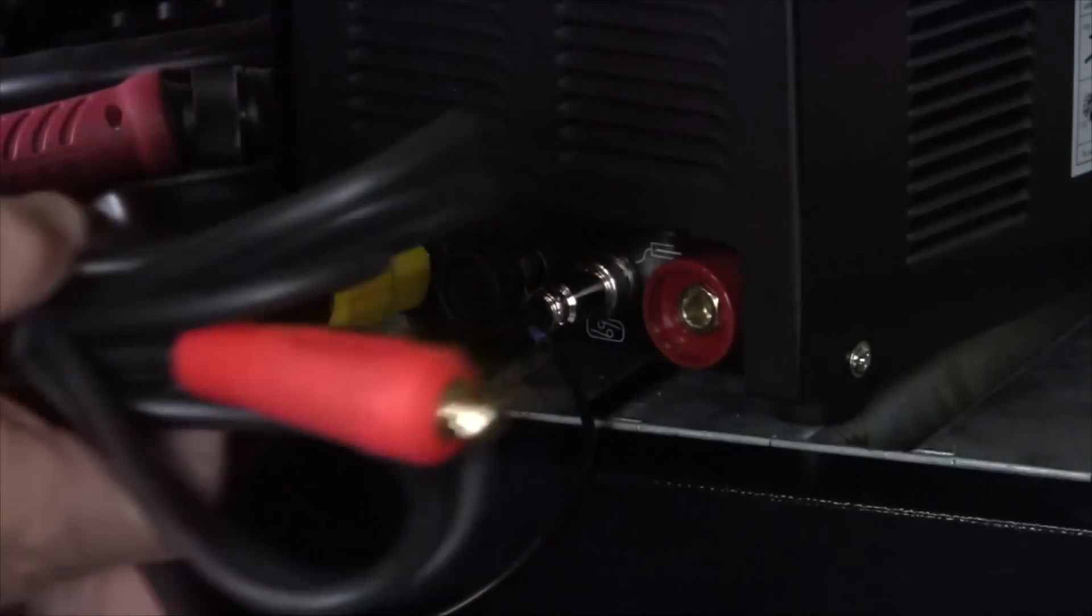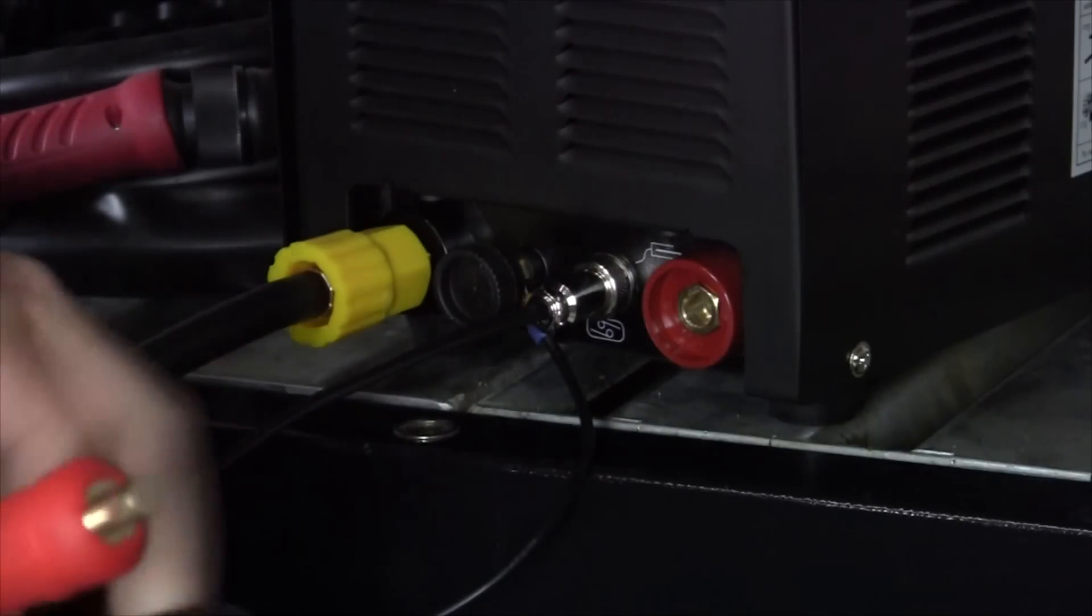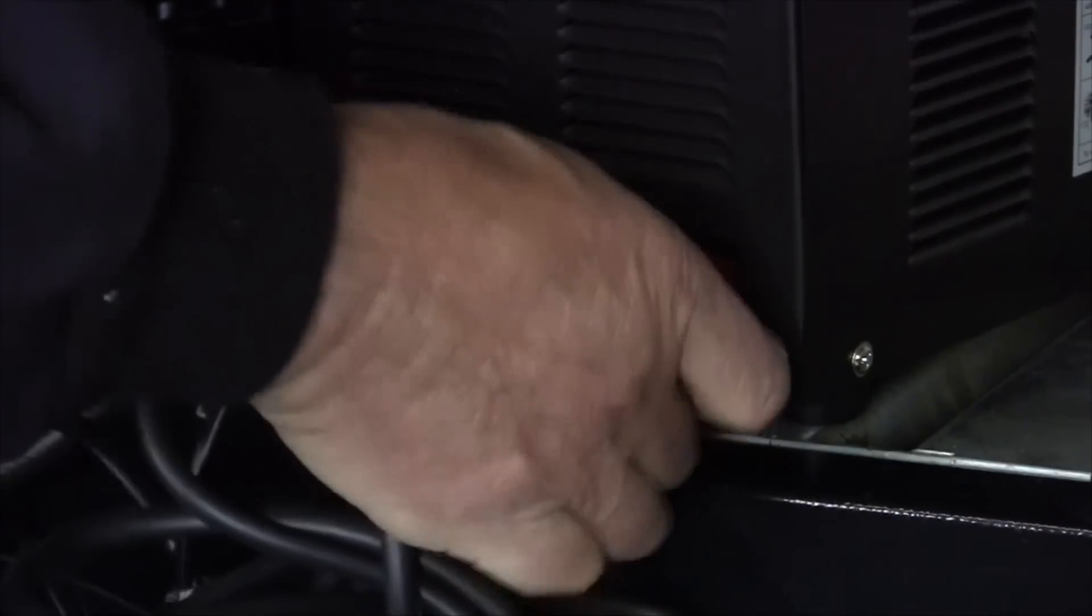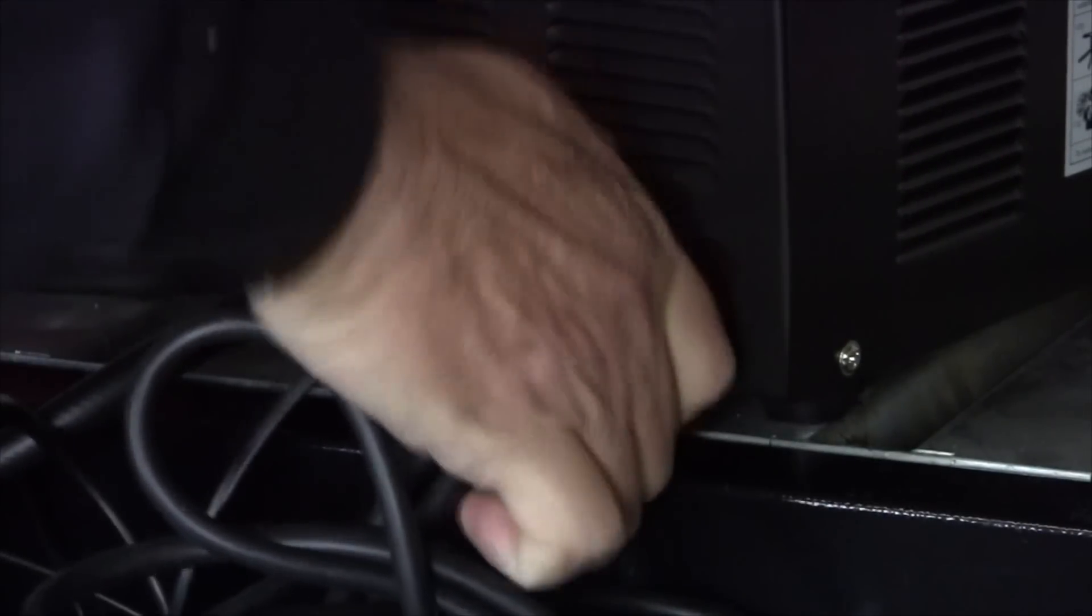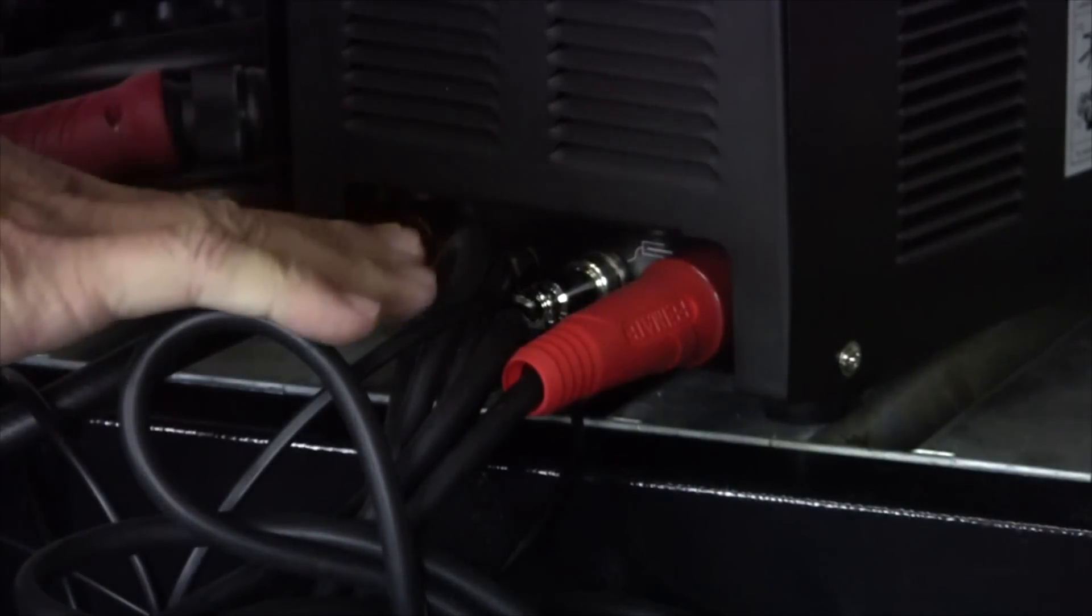Okay, torch is connected. Here's our ground clamp with a DENS connector. That's just going to go in and rotate. And that's connected. So all our connections are made in the front of the machine.